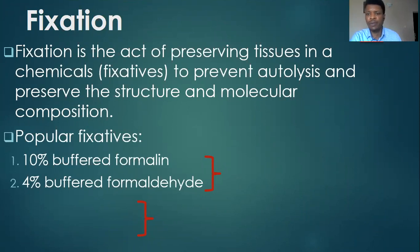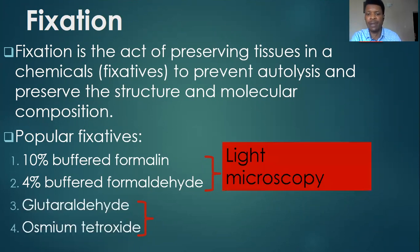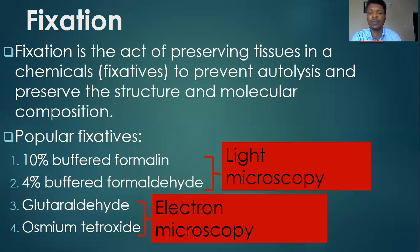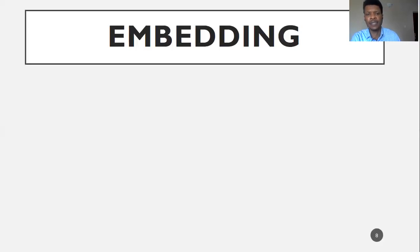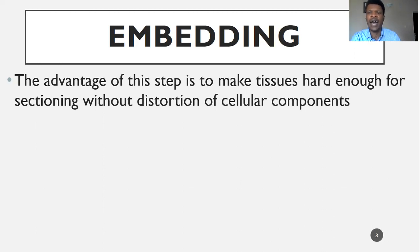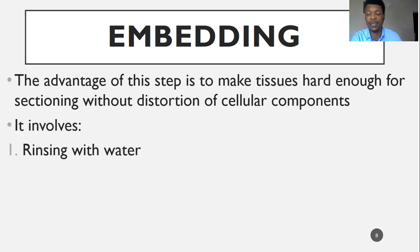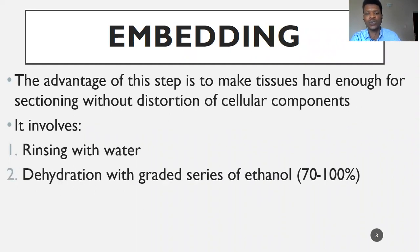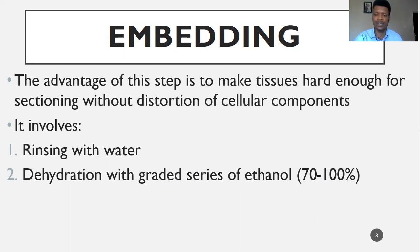Popular fixatives are 10% buffered formalin and 4% buffered formaldehyde — these are for light microscopy. We also have glutaraldehyde and osmium tetroxide for electron microscopy. After fixing the tissues properly, we go into the next stage called the embedding stage. This stage is to make the tissue hard so that during sectioning you don't distort the cellular structure. The fixatives are rinsed off and dehydrated through a graded series of ethanol. This dehydration means you're taking out the water. You start from 70% alcohol to about 90%, 95%, and absolute ethanol — an ascending series of alcohol.